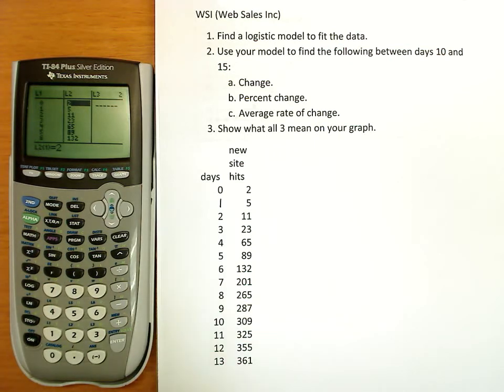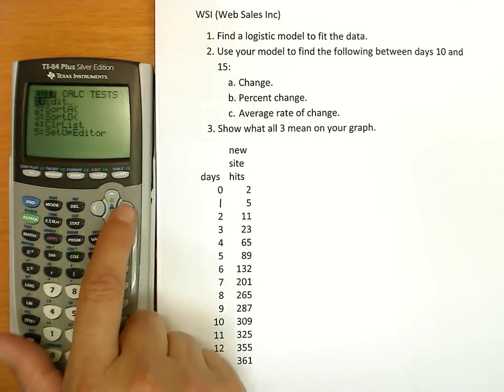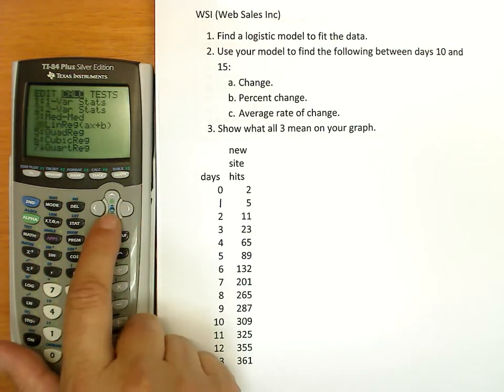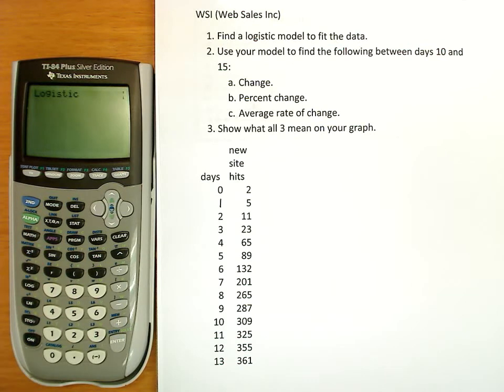Now we want to actually use that data to find the logistic model. So I'm going to type stat, select calculate, and go down the list until I find logistic and hit enter. Hitting enter again runs it, and it will now calculate the model for me.